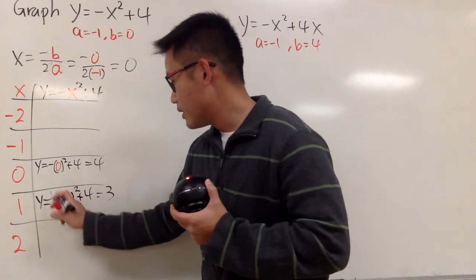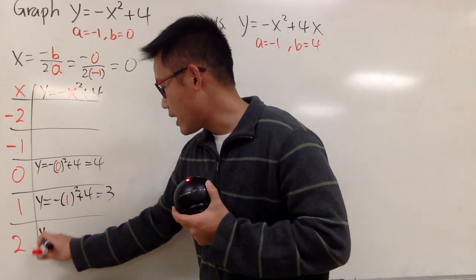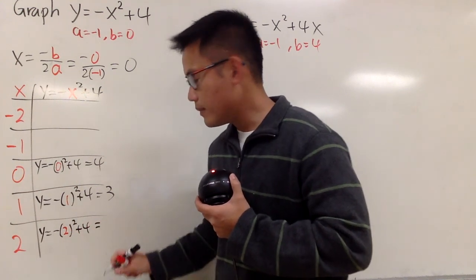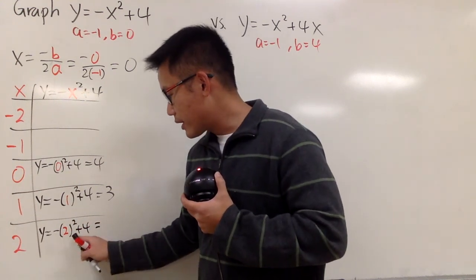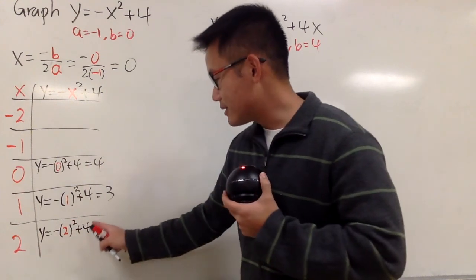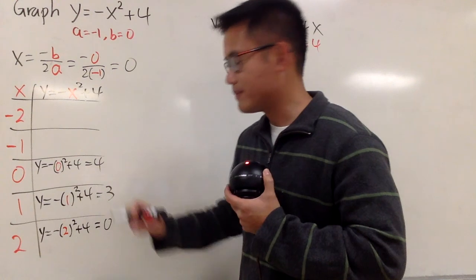And then, plug in 2 into x, we get y equal to negative 2 squared plus 4. And notice that this right here is 4, and you have a negative 4, and then plus this 4, you get 0.